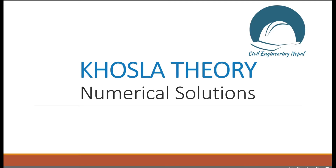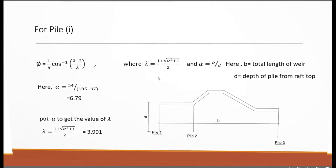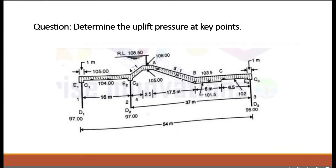Now we are going to start our topic, Khosla theory. Here is a question where a weir is shown with three cut-offs or keys: E1, D1; E2, D2; and E3, D3. The water level at the crest is 108.5 m ASL, raft thickness is one meter, slope is 5 to 1, and the raft top at downstream is 103.5 m ASL. The depth of the piles is 97, 97, 97 and 95 meters.